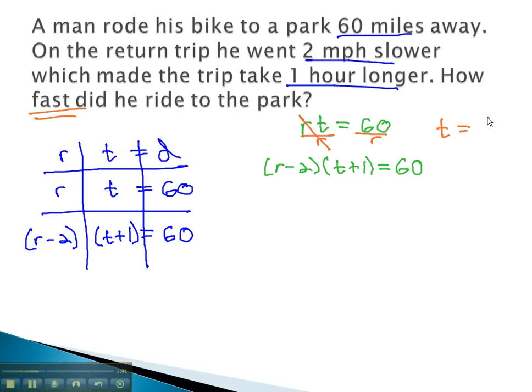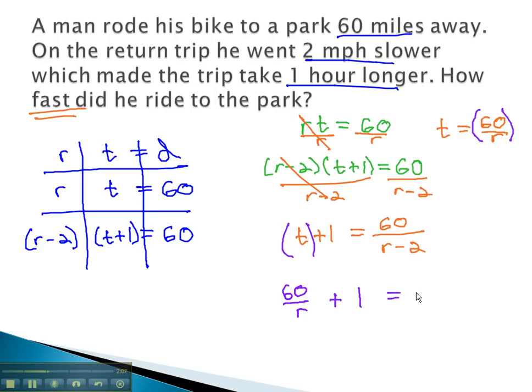This gives us time is equal to 60 over r, and dividing the other equation by r minus 2 gives us time plus 1 equals 60 over r minus 2. We are now ready to make a substitution with the time into our equation. Replacing the time with 60 over r plus 1 will be equal to 60 over r minus 2. And this gives us a rational equation we can solve to find out how fast he rode to the park.